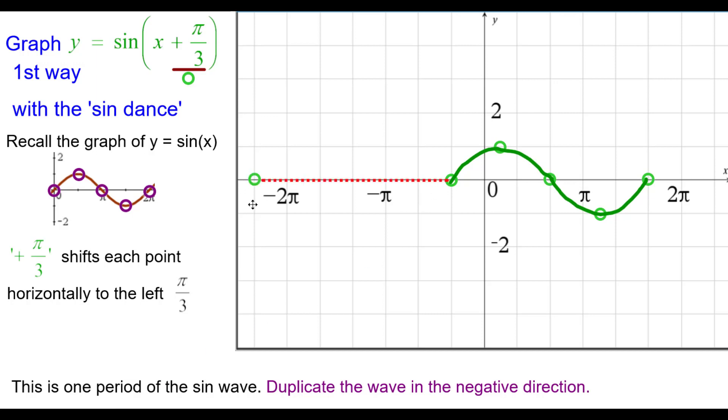That would be negative 7 pi over 3, 0. This maximum will go back 2 pi units, a period. This goes back a period, this goes back a period, and this goes back a period. Connect the points as a sine wave, frown and then a smile.